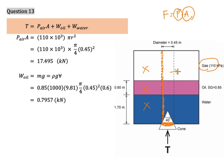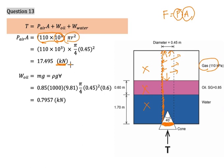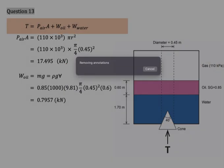For the gas, the pressure is 110 kilopascal, and this pressure acts equally in all directions. We take 110 × 10³ Pa and multiply by the cross-sectional area using π r². The force caused by the gas is calculated to be 17.495 kilonewtons.